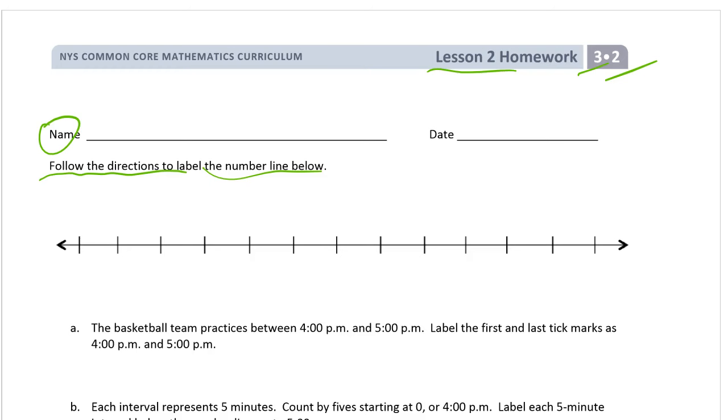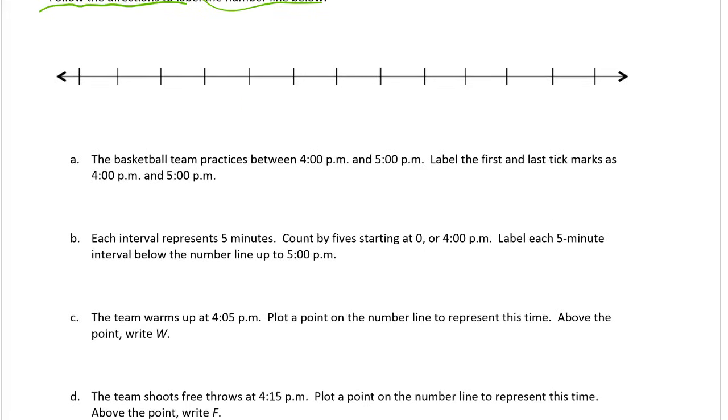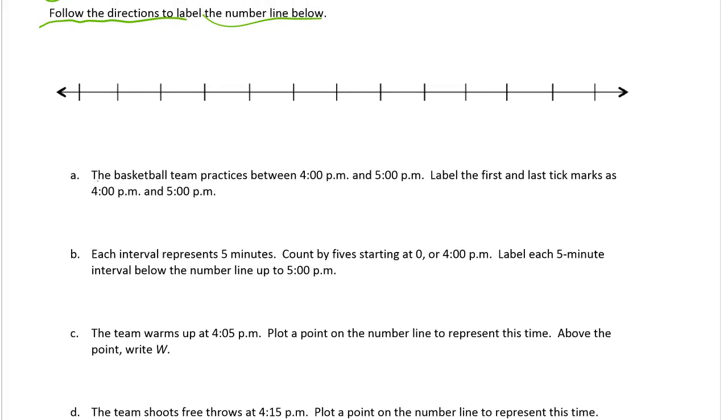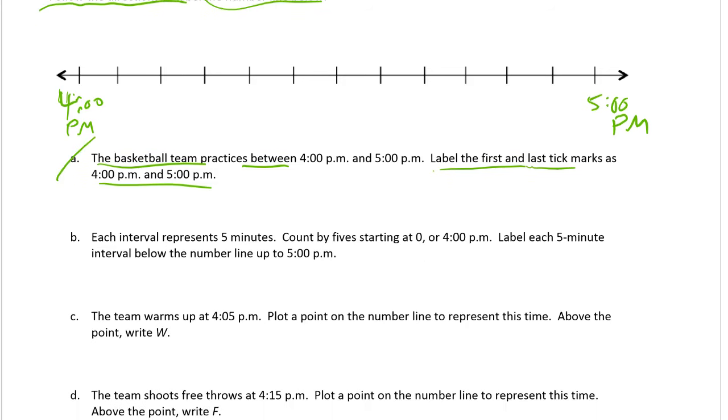So here's the number line and our first direction for labeling says the basketball team practices between 4 p.m. and 5 p.m. Label the first and last tick marks as four and five. So here's four, four o'clock, and the last one is five o'clock. These are both p.m. All right and that's all we have to do for this one.